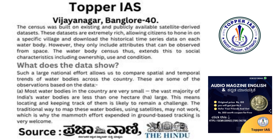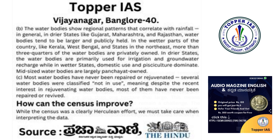What does the data show? Such a large national effort allows us to compare spatial and temporal trends of water bodies across the country. First, most water bodies in the country are very small — the vast majority are less than one hectare in size. This means locating and keeping track of them is likely to remain a challenge. The traditional way to map these water bodies using satellites may not work, which is why the mammoth effort expended in ground-based tracking is very welcome.